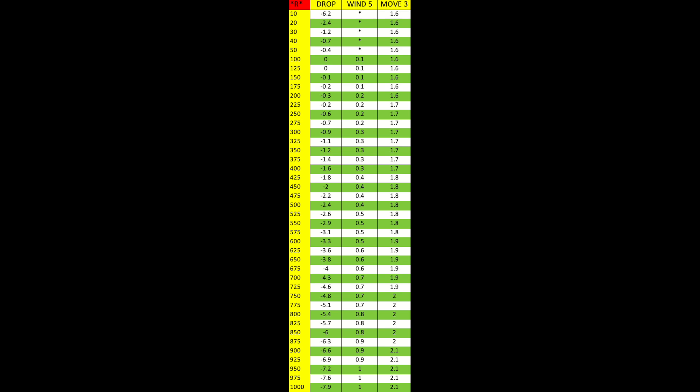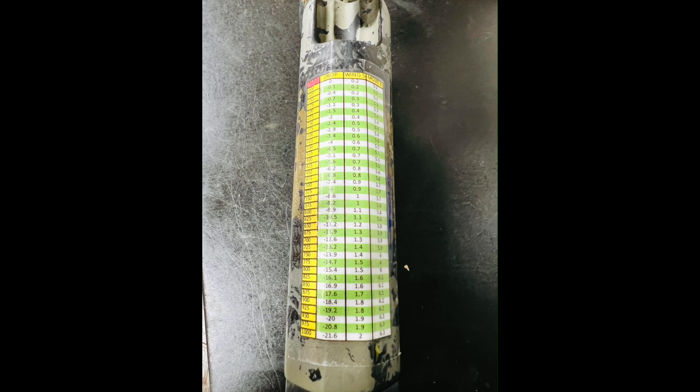Here's one more variation that actually took over for the previous one because it has a little bit more information on it while still being small enough to tape on your cheek piece for quick reference. One thing you'll notice about all three cards is I use colors to differentiate between the different values and rows, making it easier to look at them at a glance and get information quickly. I have this card set up to show drop in 10-yard increments to 50 yards, then from 100 to 1000 in 25-yard increments — a finer scale because I had plenty of room on my cheek piece and it's always nice when you don't have time to do math in your head during a match.